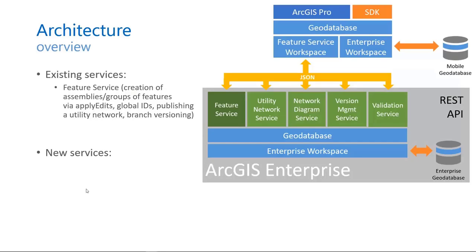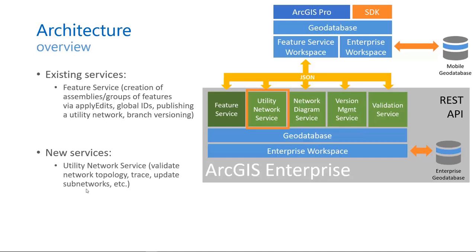Here's one way of looking at the architecture. We started off this project by having feature services as part of ArcGIS Enterprise. Feature services are responsible for all the editing of features inside enterprise geodatabases. As part of this project, we've developed some new services — one is the utility network service, which supports operations such as validating your network topology, building your network index, tracing, and sub-network management.